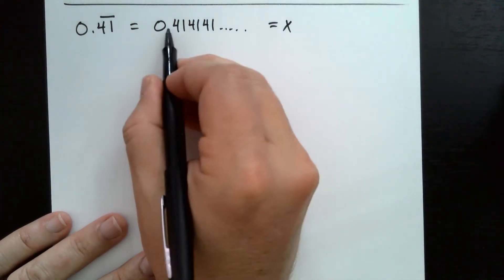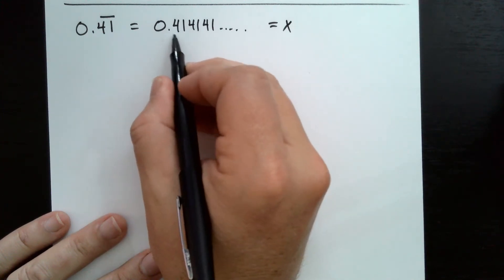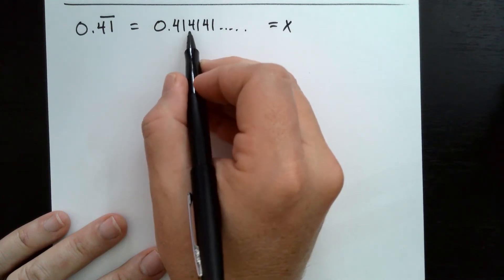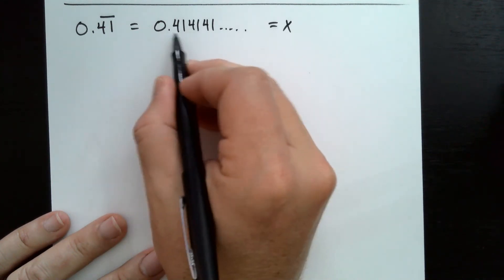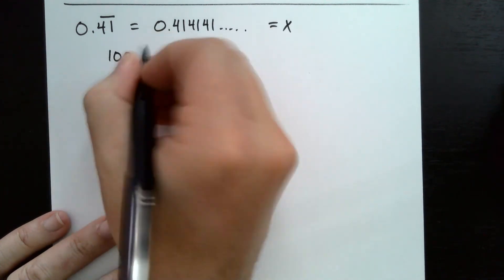But we're not going to multiply by 10 this time, because that would get the decimal between the 4 and the 1. We want to get the entire 41 outside of the decimal. So what would I have to multiply the x by to get the decimal place to move two digits?